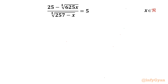Welcome back to Infigyan friends. In this video we are going to take up one very interesting question on radical equations. The equation is 25 minus the 4th root of 625x over the 4th root of 257 minus x, equal to 5.